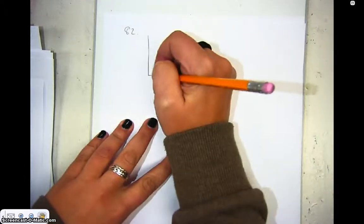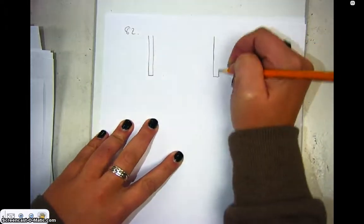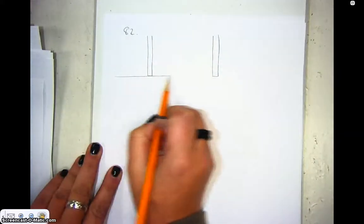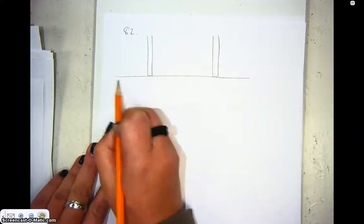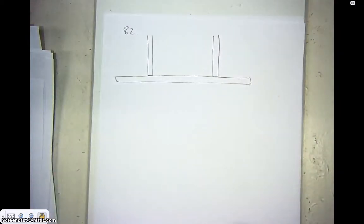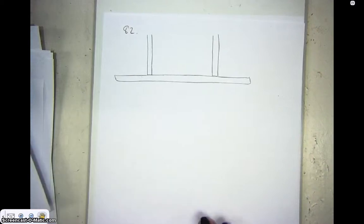So this is number 82, and in this case, instead of having a table with legs, we have ropes attached to a beam here, and they're holding the beam up.